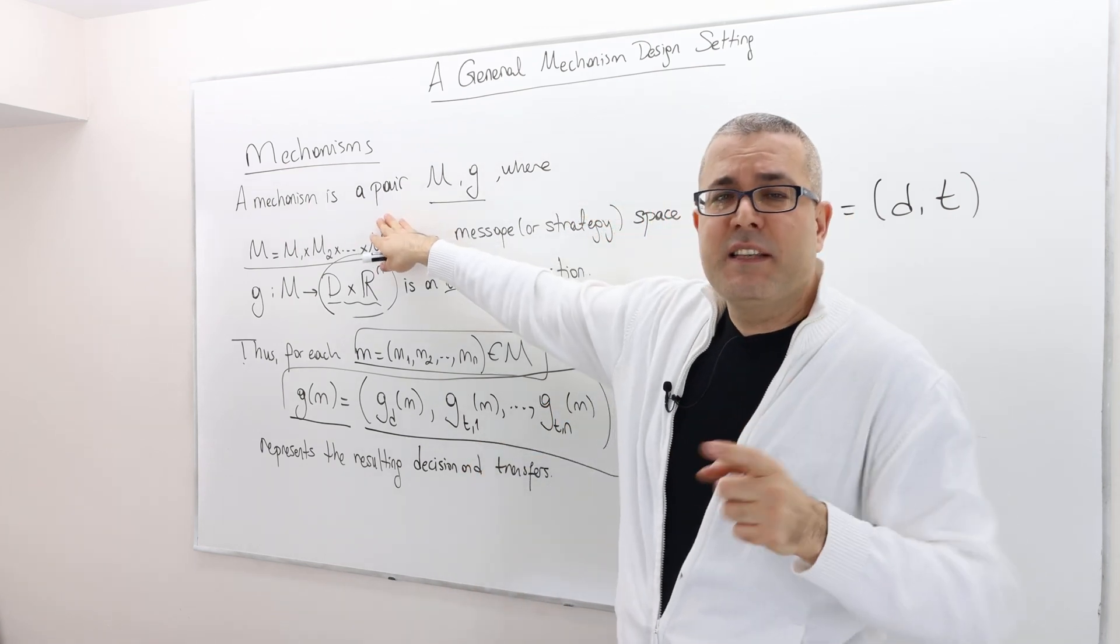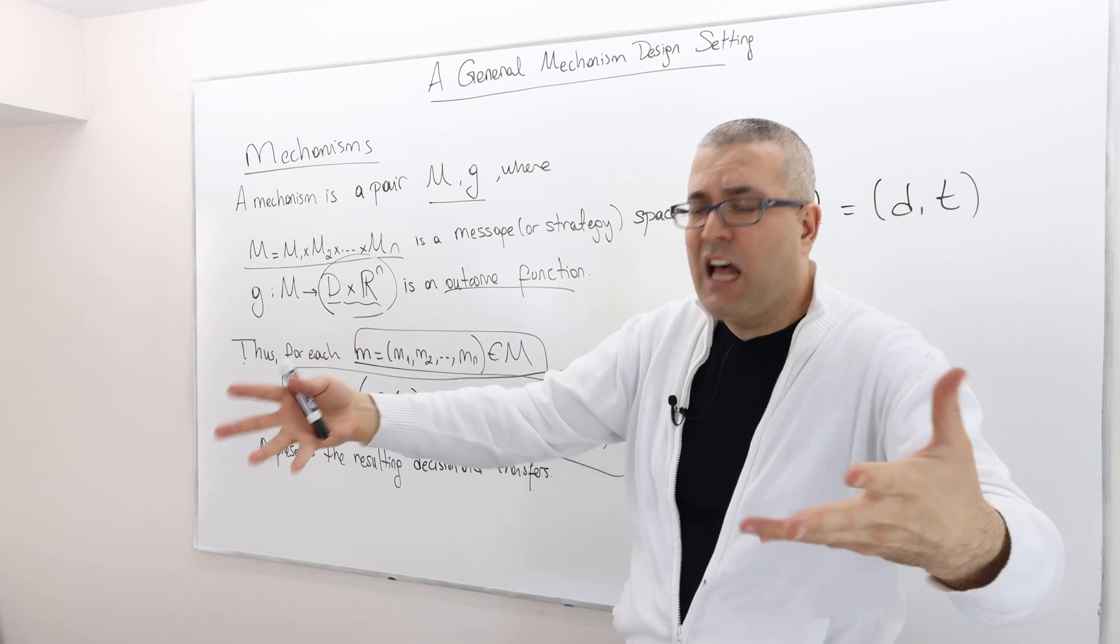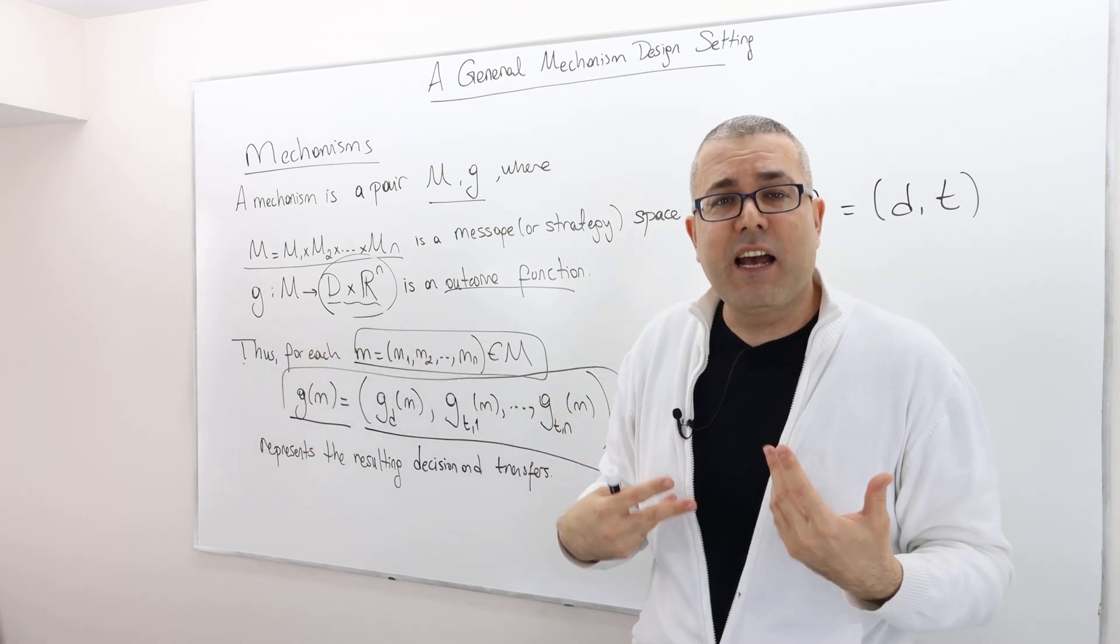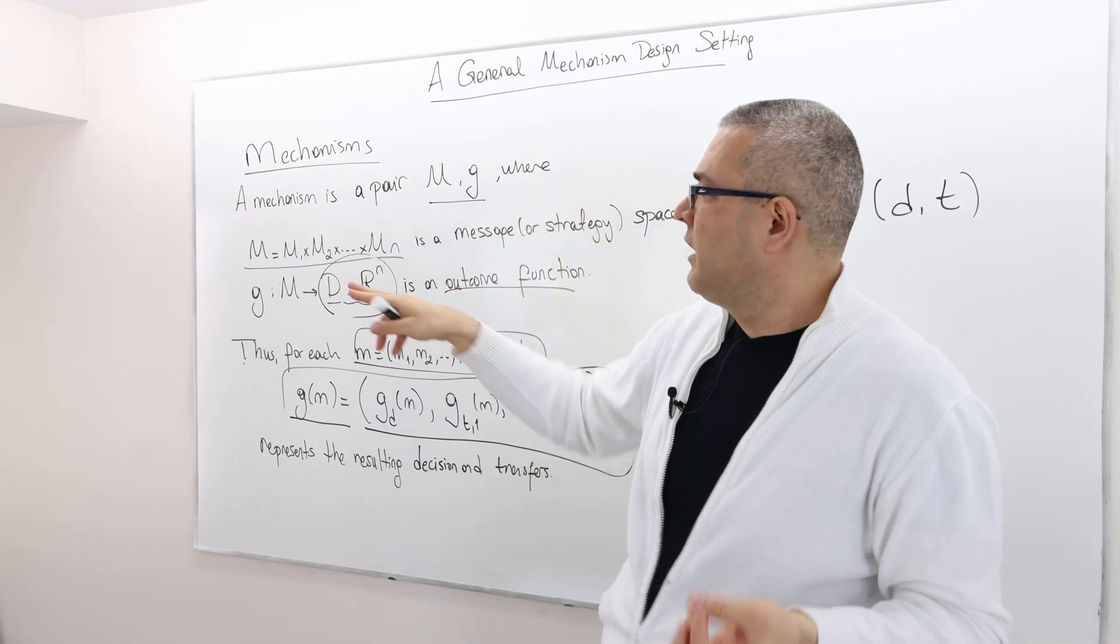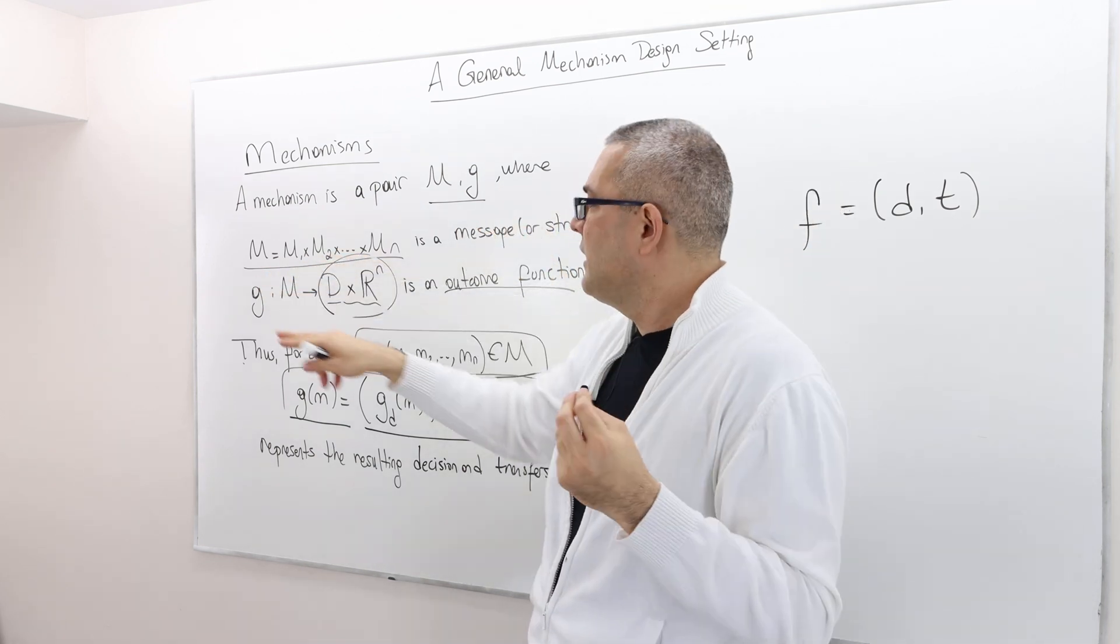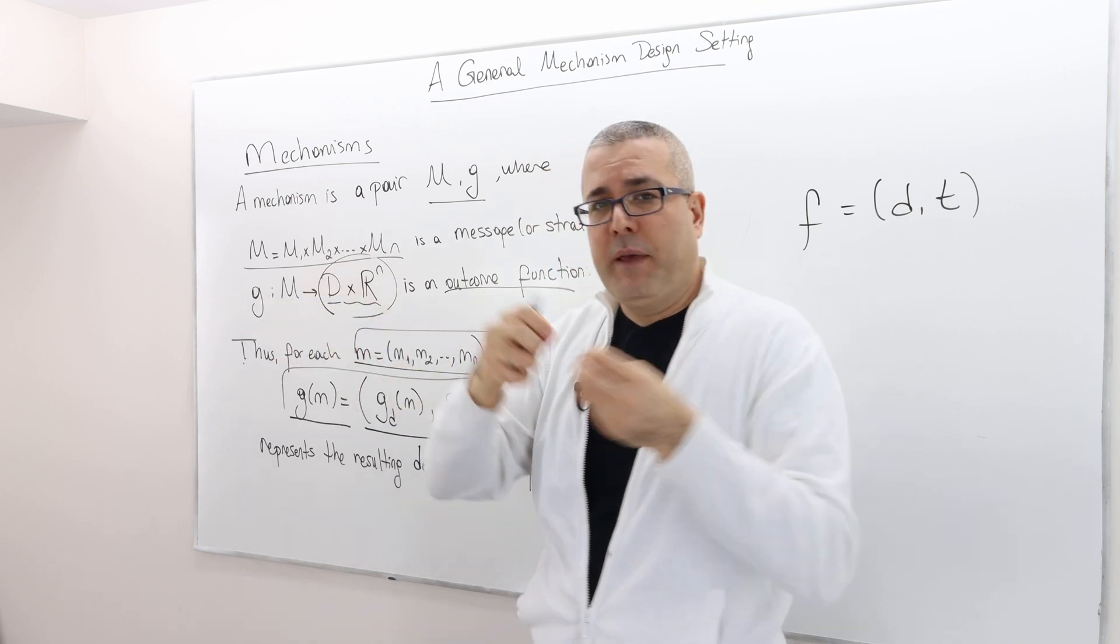It tells them, tell me how much you want to pay. So the messages are actually the bids. All right. And then given the bids, the mechanism, the first price auction is going to determine who wins and who loses.